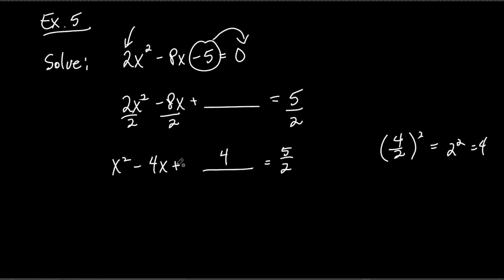Will this ever be a minus? No — it's always going to be plus, and here's why: to figure out what goes there, we take half of a number and then square it. If we square a negative we get a positive; if we square a positive we get a positive. So this will always be positive — I can always put plus blank. Now I can't just add four to the left side arbitrarily; I have to add four to the other side too. This is a fraction so I'll put it over one.